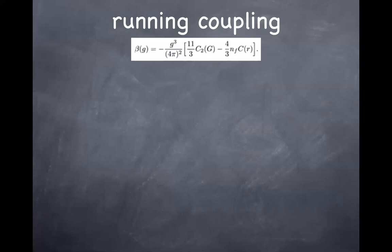If we have measured the size of the gauge coupling constant at energy scale mu, that allows you to compute at what energy scale the gauge coupling constant would blow up if you believe in the one-loop renormalization group equation. The question is: what happens at this energy scale?